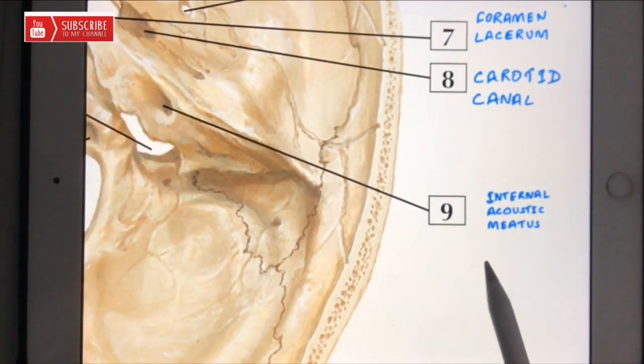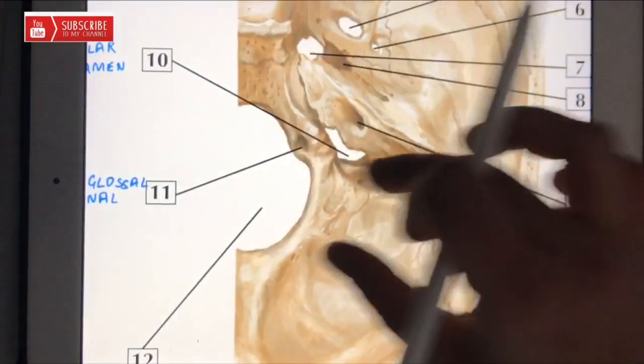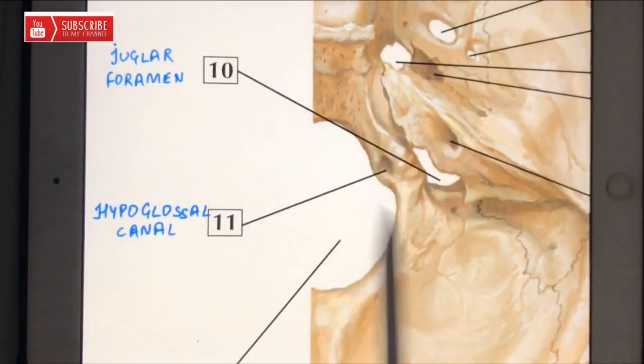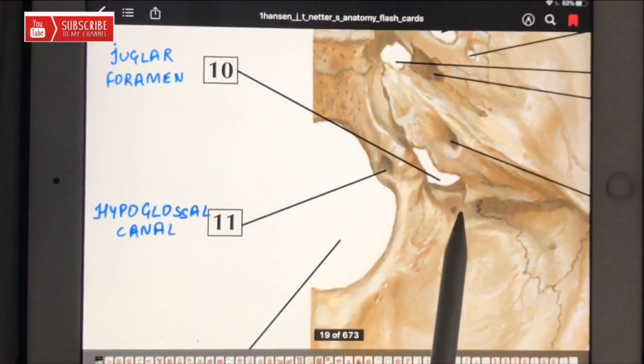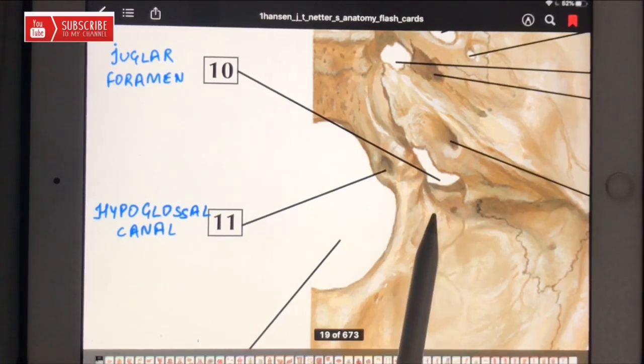Number nine is the internal acoustic meatus, and through this only one cranial nerve passes, that is the facial nerve, which is the seventh cranial nerve. Now comes to the tenth. Number ten is the jugular foramen, and through the jugular foramen many structures pass.